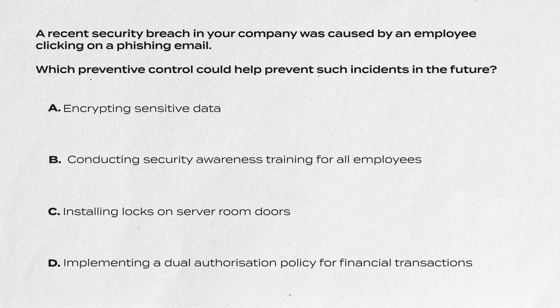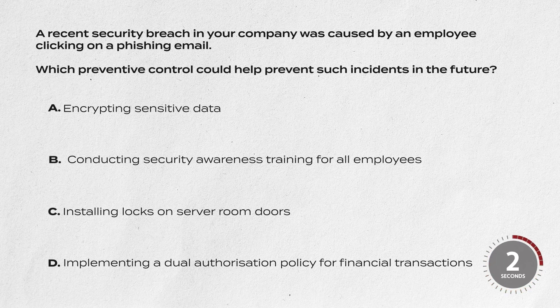A recent security breach was caused by an employee clicking on a phishing email. Which preventative control could help prevent this in the future? A) Encrypting sensitive data, B) Conducting security awareness training, C) Installing locks on server room doors, or D) Implementing dual authorization for financial transactions. The correct answer is B — training users makes them far more likely to spot and avoid phishing emails.